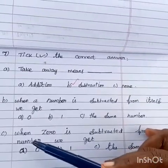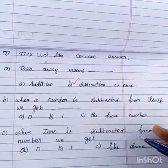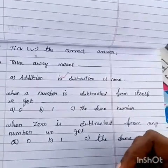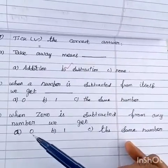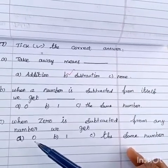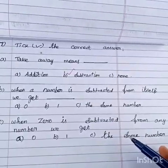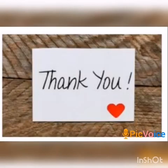Then, when 0 is subtracted from any number, we get. The answer is 0, 1, the same number. The answer is number, numbers, tables, addition, subtraction. All of this is basic.